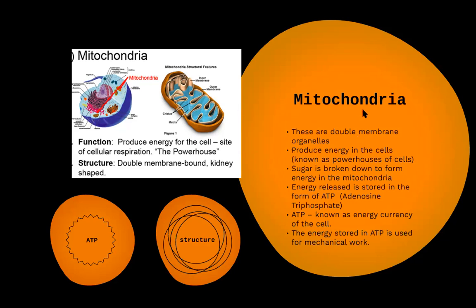Mitochondria are double-membrane organelles, with an outer membrane and an inner membrane. They are the powerhouse of the cell — you can also call it the kitchen of the cell where all energy is produced. The sugar, which is the ultimate result of digested food, is further broken down in the mitochondria, resulting in energy production.